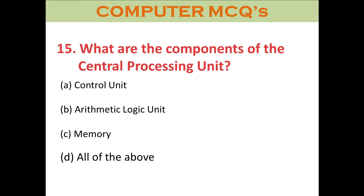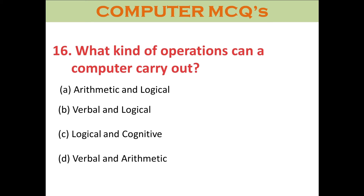Question fifteen: What are the components of the Central Processing Unit? A. Control Unit. B. Arithmetic Logic Unit. C. Memory. D. All of the above. The right answer is D: All of the above.